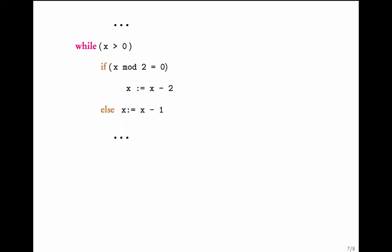Let us now look at another example. Consider this program fragment manipulating a variable x. There is a while loop with a condition on x: if x is bigger than 0, the loop is entered. If x is even, its value is reduced by 2. If x is odd, its value is reduced by 1. And then the condition is checked again.